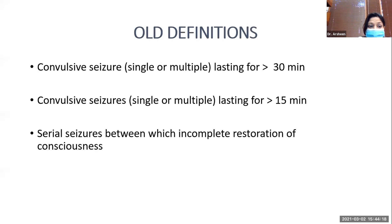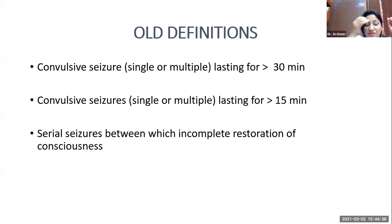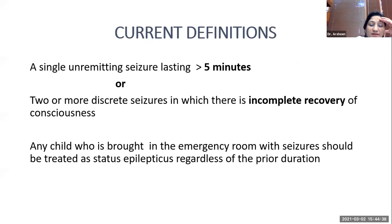In the old era, status was defined as convulsive seizures lasting longer than 30 minutes, or convulsive seizures lasting more than 15 minutes, or serial seizures between which there is incomplete restoration of consciousness. Currently, status is defined as a single unremitting seizure lasting more than five minutes, or two or more discrete seizures with incomplete recovery of consciousness between them.